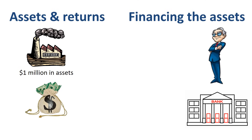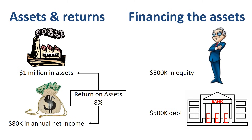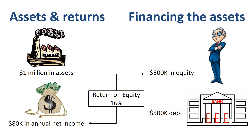Equity is not the only way to finance assets — you could also go to the bank for a loan. How about financing the assets 50% with equity and 50% with debt? Debt hardly ever comes for free; let's assume the net income drops to $80,000 due to interest charged. Return on assets is now 8%, which is lower than the 10% we had before. Return on equity goes up: $80,000 in net income divided by $500,000 in equity is 16%. This is the effect of financial leverage — return on equity was 10% when assets were financed fully by equity, and 16% when financed 50-50 with equity and debt.